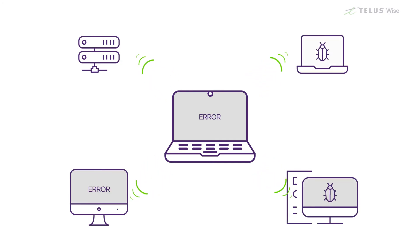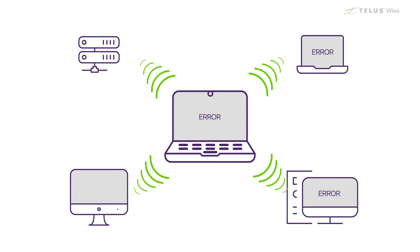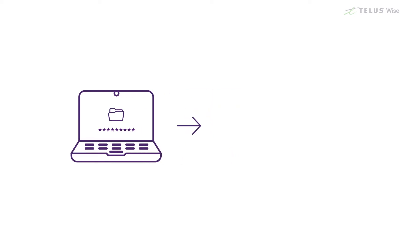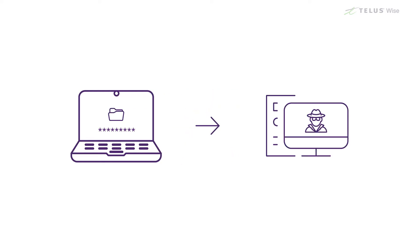A virus infects your computer and makes it stop working properly, and can spread quickly to other computers. Spyware is another type of malware. It watches what you do online, like entering your bank account numbers and passwords, and sends that information to the people who made the malware. They can then use that information to get into your bank or other online accounts.